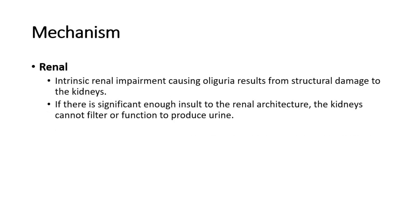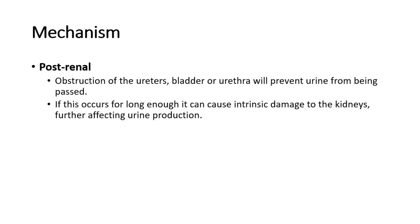For renal causes, there is intrinsic renal impairment causing oliguria that results from structural damage to the kidneys. If there is significant enough insult to the renal architecture, the kidneys cannot filter or function to produce urine. For post-renal causes, obstruction of the ureters, bladder, or urethra will prevent urine from being passed. If this occurs for long enough, it can cause intrinsic damage to the kidneys, further affecting urine production.